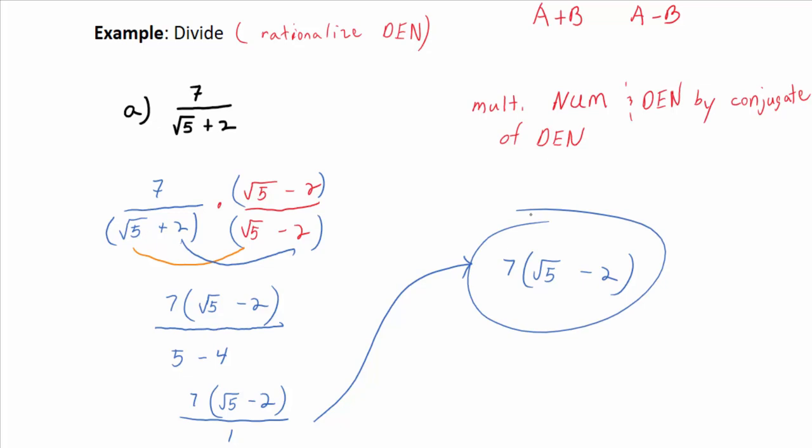So when does this work? If you're asked to divide or rationalize the denominator, in other words, get rid of the radical in the denominator, and you have a sum of terms or a difference of terms, at least one of them involving a radical in the denominator, then multiply numerator and denominator by the conjugate of the denominator to get rid of the radical.